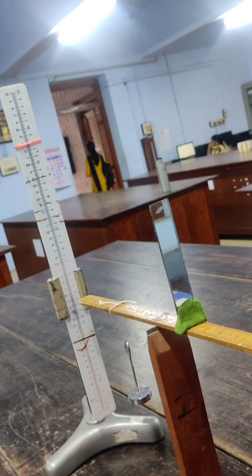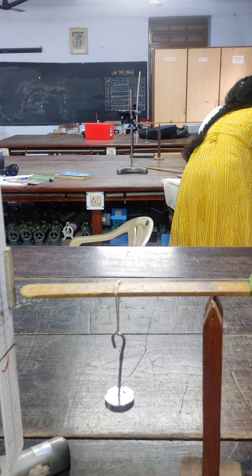We have to focus the scale when it is reflected by the first mirror. In the first mirror, the real image is showing, and that reflected image of the scale is shown by the second mirror.